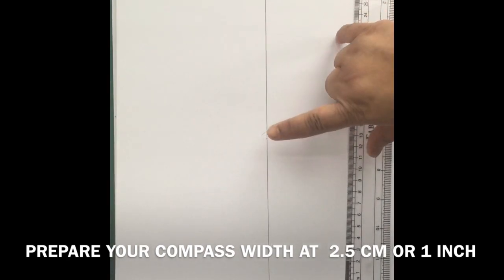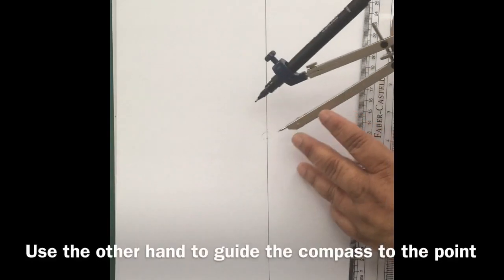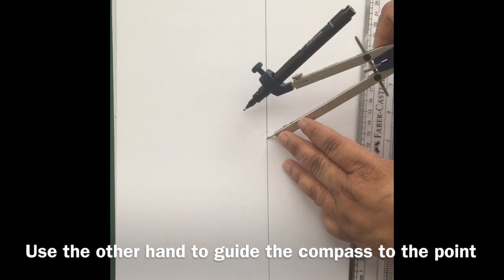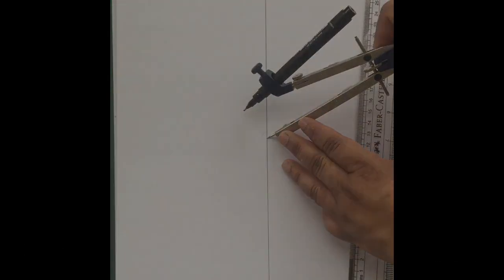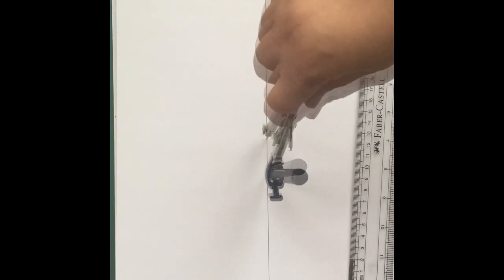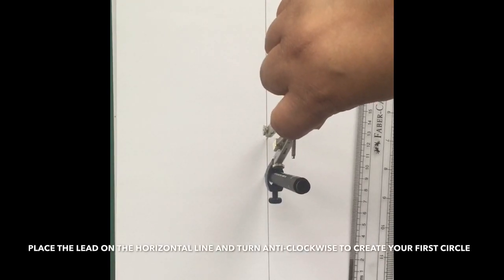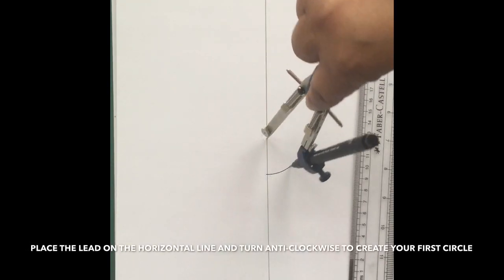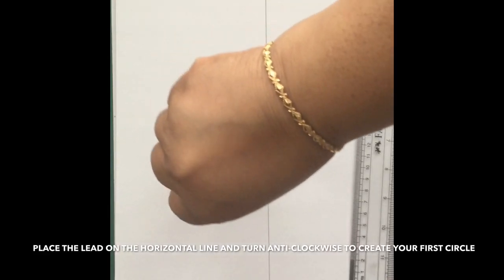Next, we're going to take our compass, place it on that point, and rest the compass on the horizontal line. Turn anti-clockwise and begin to breathe out and move your compass round to create your first circle.